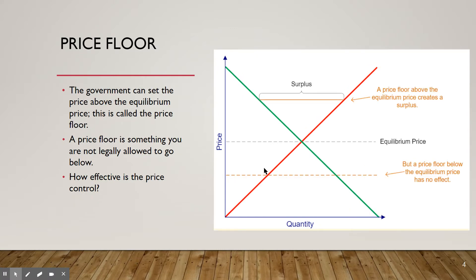A price floor is the minimum that you're allowed to sell something for — you can't go below that price. If it's above the equilibrium price, this is going to create a surplus. If it's below, then it's not effective. And again, the equilibrium price can shift; it can go all over the place.